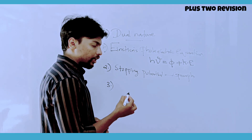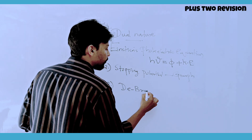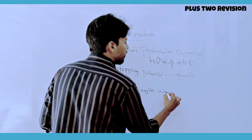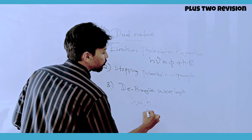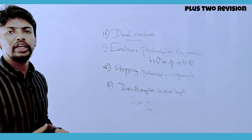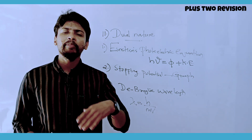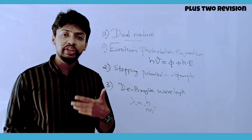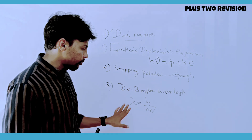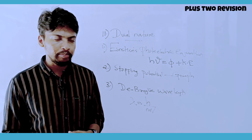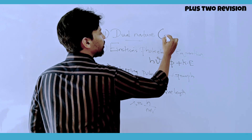Dual Nature of Matter and Radiation also covers De Broglie wavelength. The general equation is lambda equals h over mv. Another form is lambda equals h divided by root of 2m times kinetic energy.